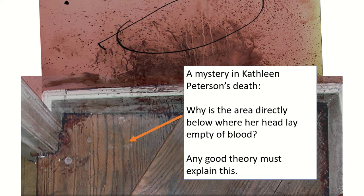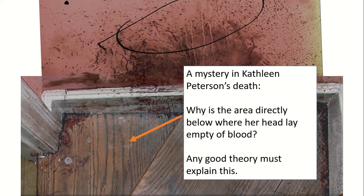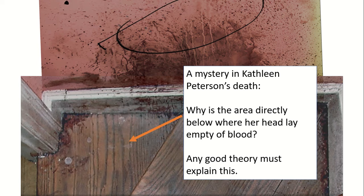I think it's completely inconsistent with the theory that she fell down the stairs, and I think it's actually best explained on the owl theory, so that's what I'm going to look at again in this video. As I said in the last video, I think we can, on the owl theory, presume that what's happening here is this is the shadow of a wing. The reason I think that is twofold: firstly, it's actually a reasonably good approximate shape for a wing, and secondly, a wing is just the sort of thing that could, in theory, be thin enough to lie between Kathleen's head and the last step. So I think this could explain the shadow rather well.